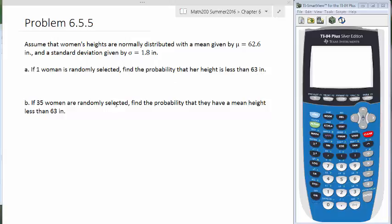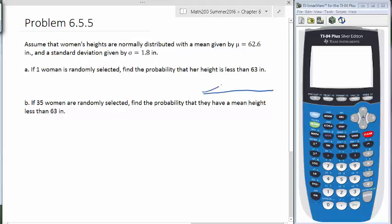So for these things, we want to draw our graph. So I'm going to do a little graph on the side here. We have a normal distribution. We have the mean of 62.6. And we want to know a probability where their height is less than 63. So 63 is a little bit bigger here, a little bit on the right side. And then we want the area on the left side.